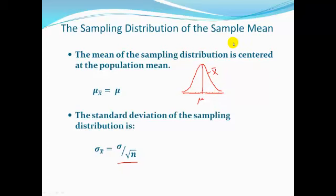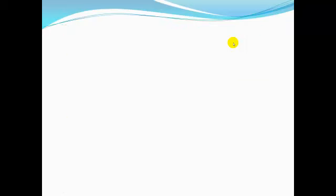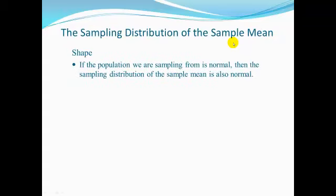These two properties of the sampling distribution of the sample mean are always true regardless of whether you take large or small samples. But by themselves, you can do absolutely nothing with them — we need the shape. We get the shape two ways. If the population we're sampling from is normal, then the sampling distribution of the sample mean is also normal. For small sample sizes, the shape of the sampling distribution looks like the population you're sampling from.